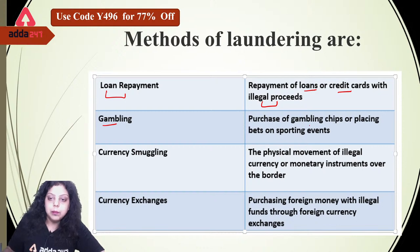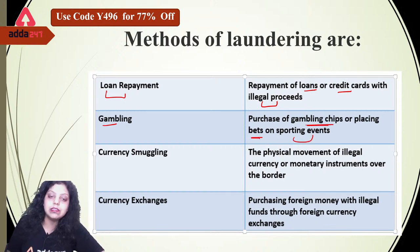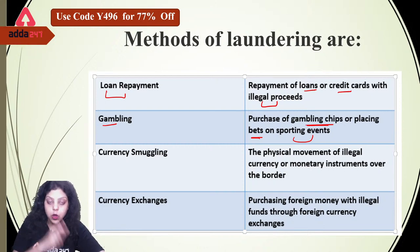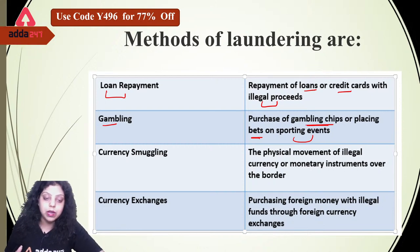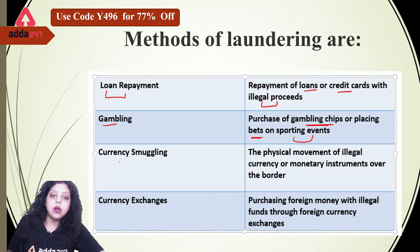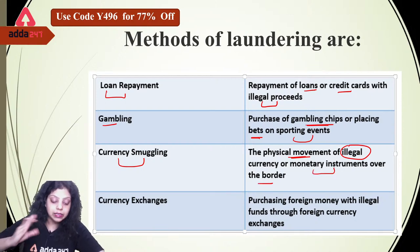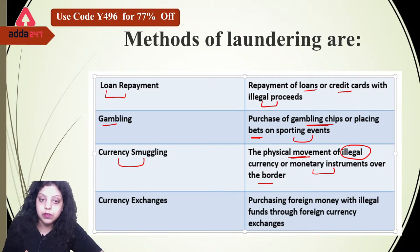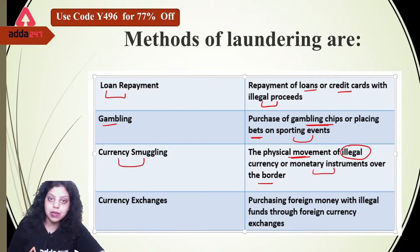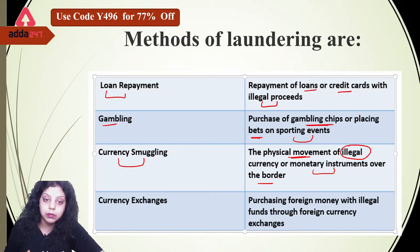Next is gambling: purchase of gambling chips or placing bets on sporting events. That is the second method by which you can launder your money from black to white, by investing in gambling. Next is currency smuggling: the physical movement of illegal currency or monetary instruments over the border. This is also a type of method by which you can convert your black money into white money.